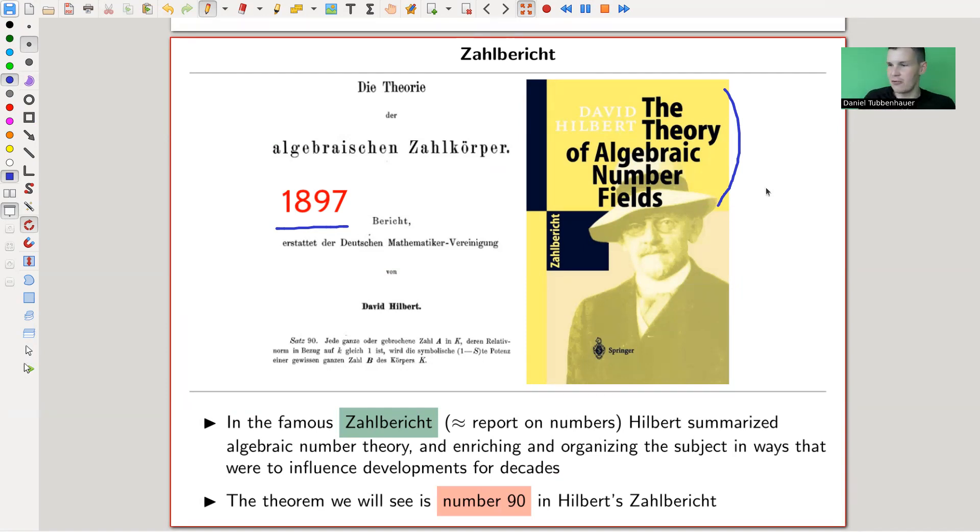And people eventually just called it the Zahlbericht, which just means a report on numbers. Nowadays, if you write a paper called Report on Numbers, probably most people wouldn't believe you. But at this point, it was just known as Zahlbericht. You can find it online, just Google it, you will find it. It's not really readable. Anyway, it's German. So if you can read German, you can try to read it.